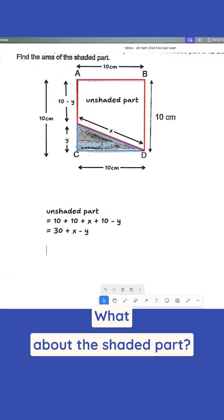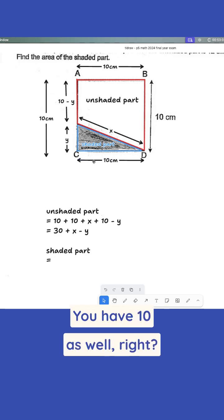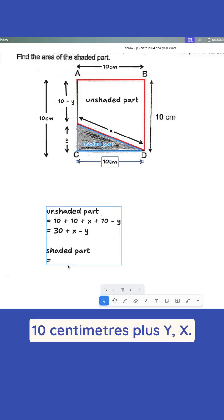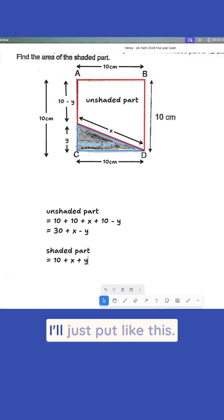What about the shaded part? So shaded part is equal to, you have 10 as well. 10 centimeters plus Y plus X. So you have 10 plus X plus Y. I'll just put it like this.